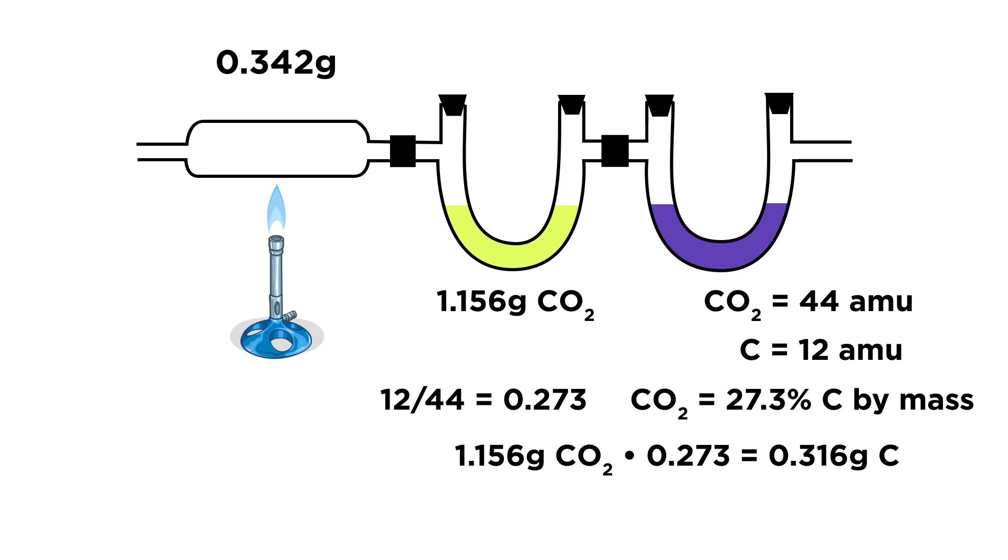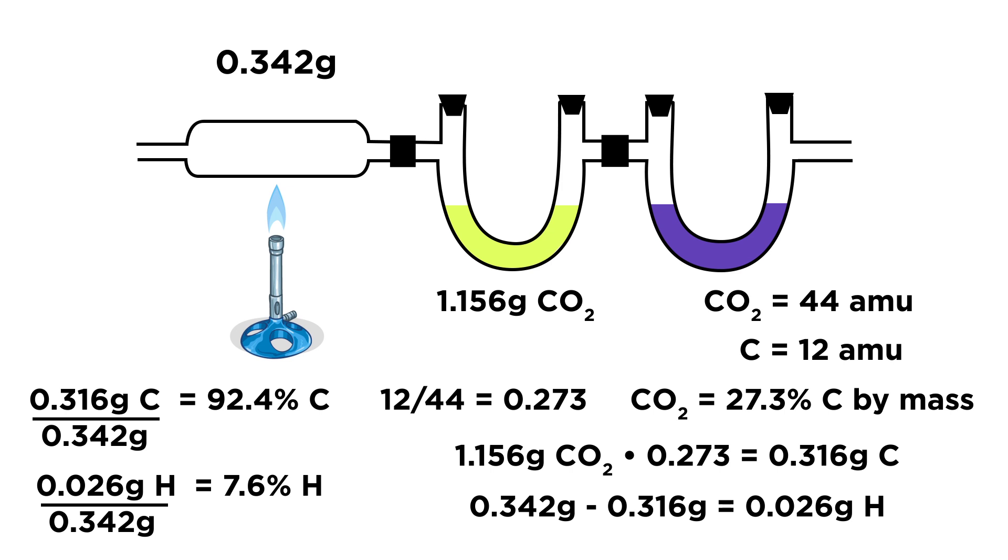So of the original sample of hydrocarbon, this much of it must have been carbon and the remainder must have been hydrogen. That makes the hydrocarbon 92.4 percent carbon and 7.6 percent hydrogen by mass. We call that the percent composition of benzene.